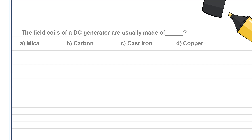The field coils of a DC generator are usually made of copper. Copper is free from corrosion resistance and has good electrical conductivity and good thermal conductivity. The correct answer is option D — copper.